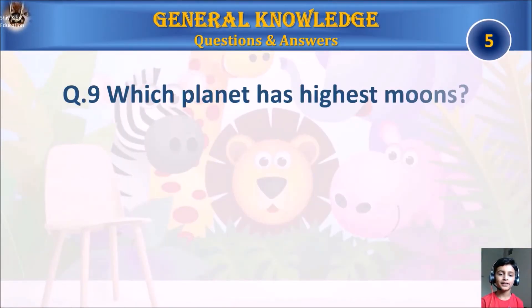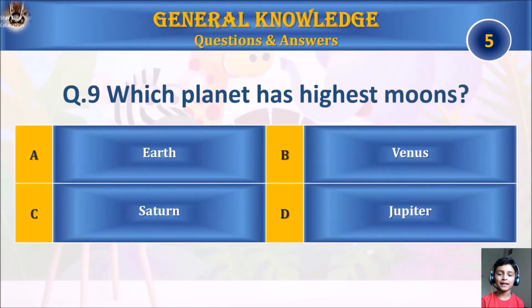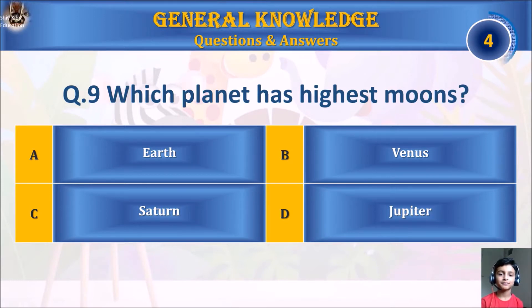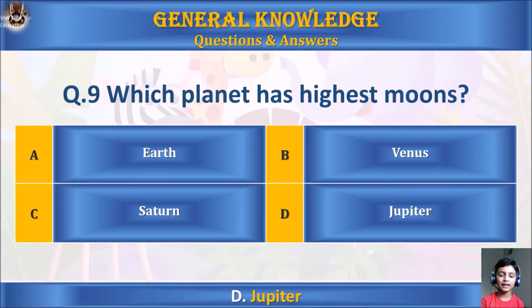Question 9: Which planet has the most moons? A. Earth, B. Venus, C. Saturn, or D. Jupiter. Your time starts. The answer is D. Jupiter.